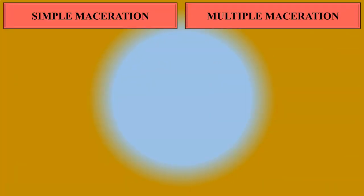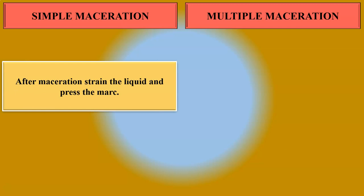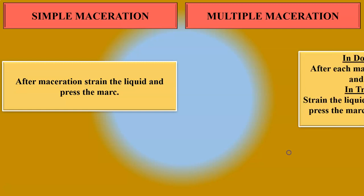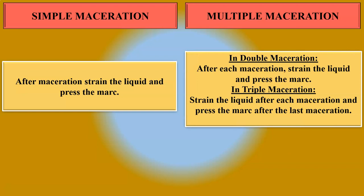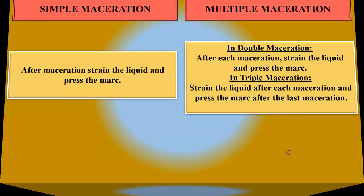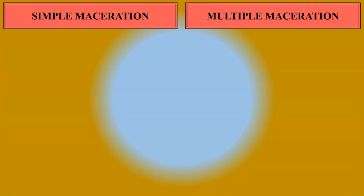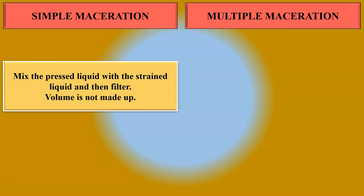The next difference between simple maceration and multiple maceration: in simple maceration, after maceration, strain the liquid and press the marc. Whereas in multiple maceration — in the double maceration process — strain the liquid and press the marc after each maceration. In simple maceration, mix the pressed liquid with the strained liquid and then filter.